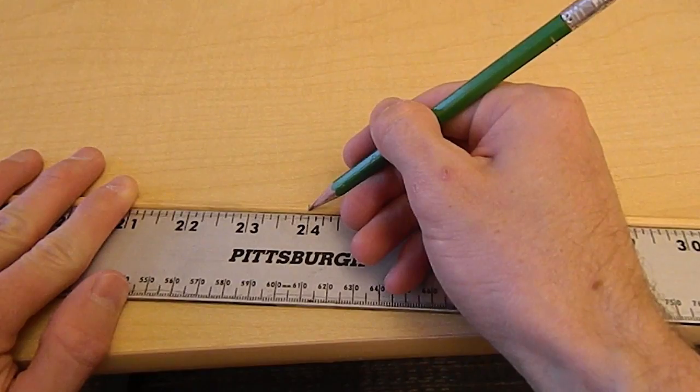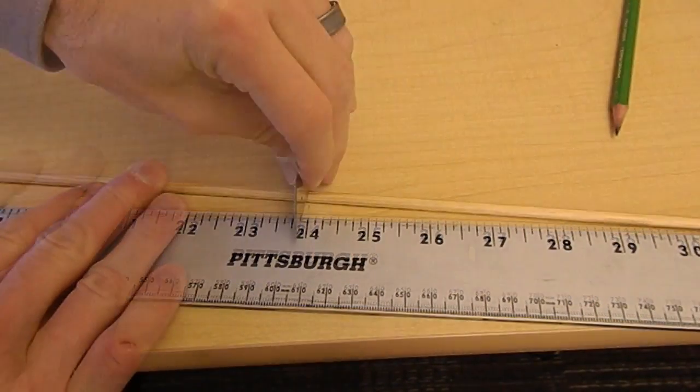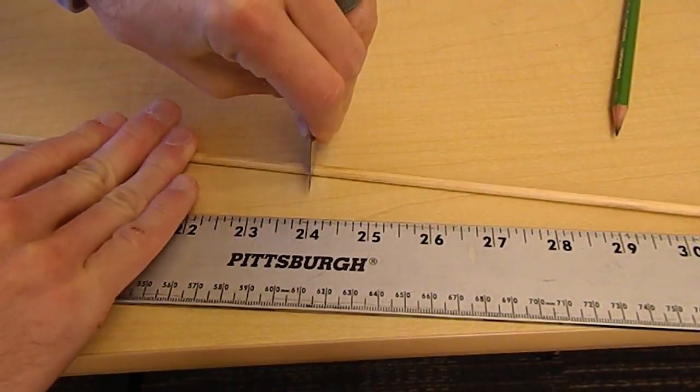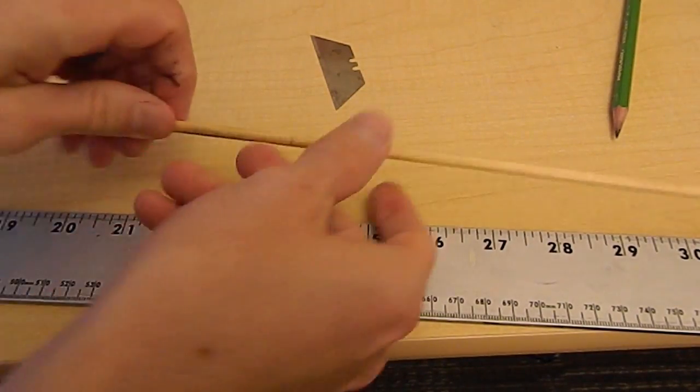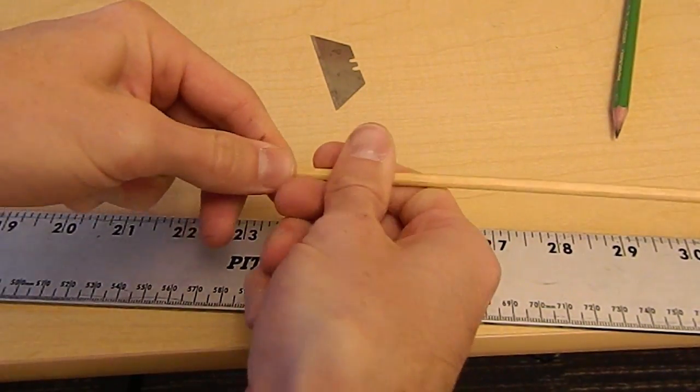I'm going to mark my dowel rod at 24 inches, then give it a quick roll underneath the razor blade to score it. Then I can easily snap it off.